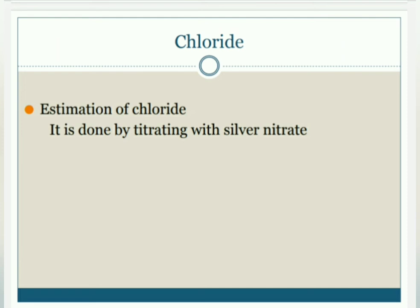Chloride exists in soil as the chloride ion (Cl-), a very soluble and mobile ion. Irrigation water containing high chloride content may cause salt burn on the foliage. Chloride can be easily determined by silver nitrate titration, in which silver reacts with chloride forming a silver chloride precipitate.